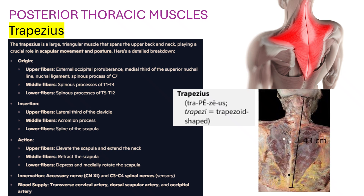Insertion — upper fibers: lateral third of the clavicle. Middle fibers: acromion process. Lower fibers: spine of the scapula. Action — upper fibers: elevate the scapula and extend the neck. Middle fibers: retract the scapula. Lower fibers: depress and medially rotate the scapula.